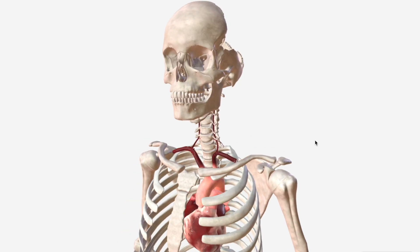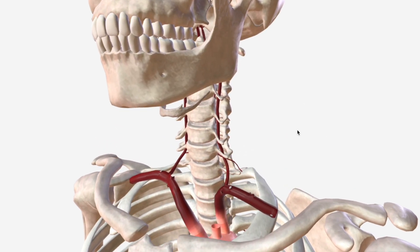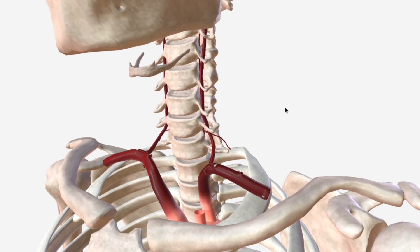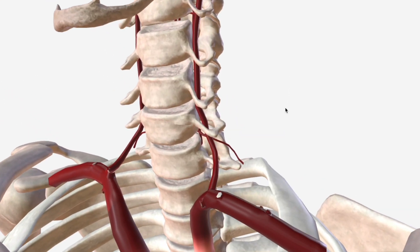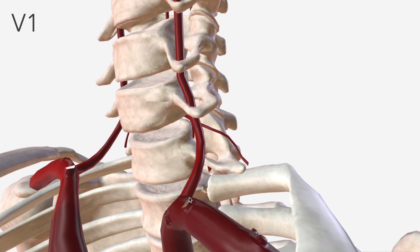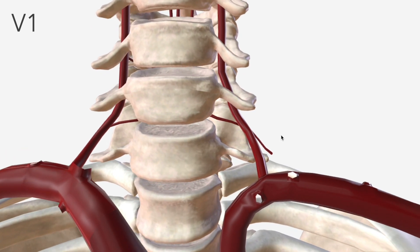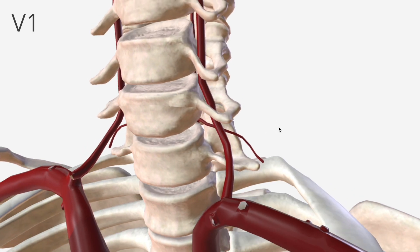In this video, we're going to talk about the anatomy of the vertebral artery. We tend to divide the vertebral artery into four separate sections. V1 runs from its origin at the subclavian artery to the transverse foramina of the sixth cervical vertebra.